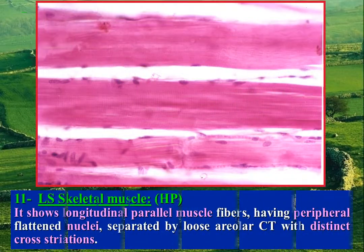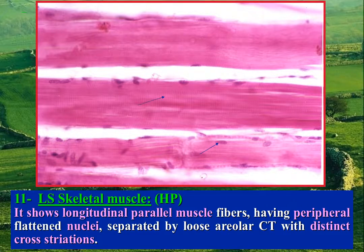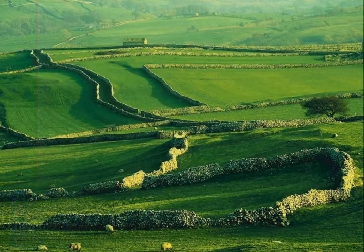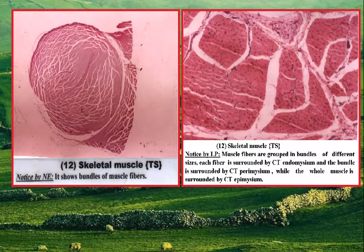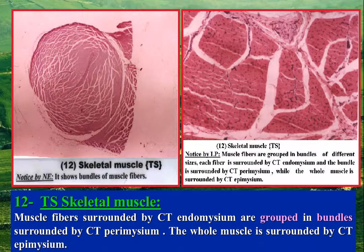TS of skeletal muscle fibers by high power shows longitudinal parallel muscle fibers having peripheral flattened nuclei separated by loose areolar connective tissue. The muscle fibers show distinct cross-striations. In TS, muscle fibers are grouped in bundles of different sizes. Each fiber is surrounded by connective tissue called endomysium, and the bundle is surrounded by connective tissue called perimysium.